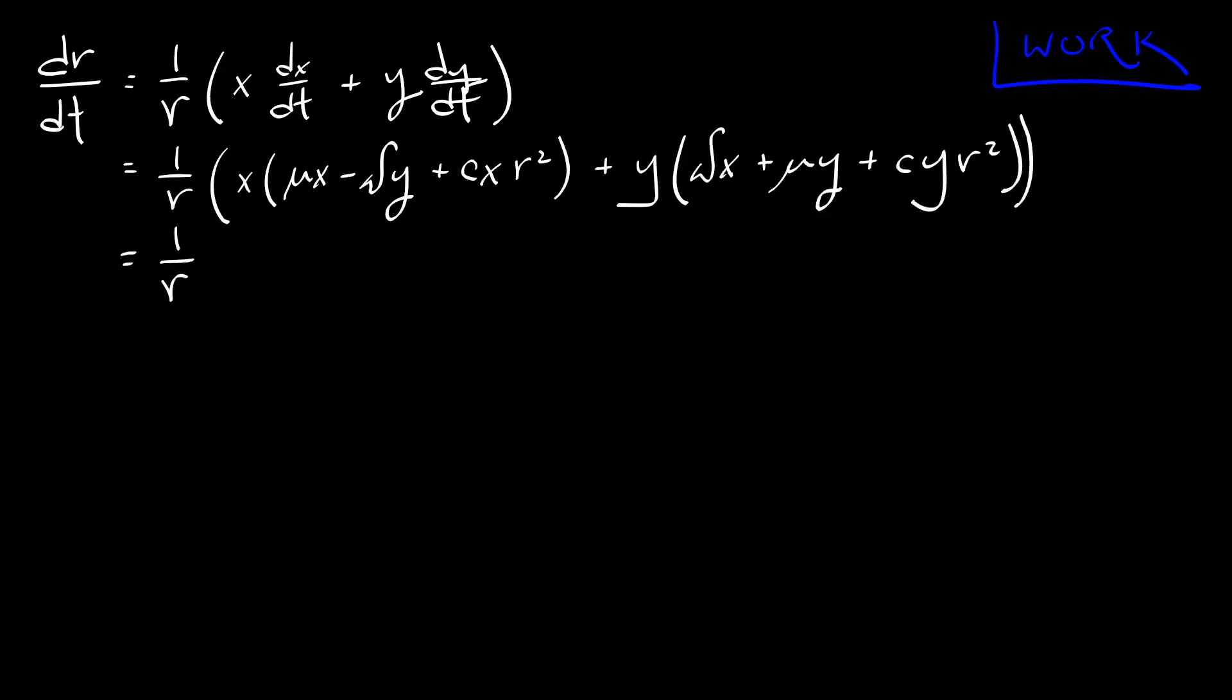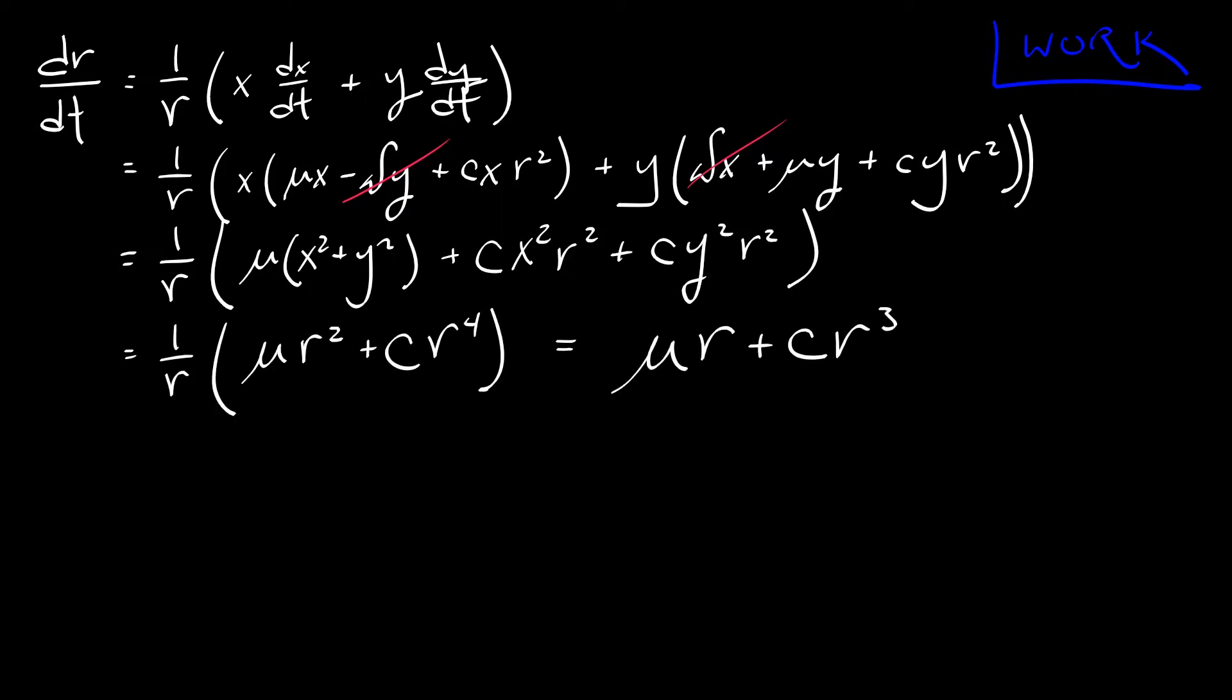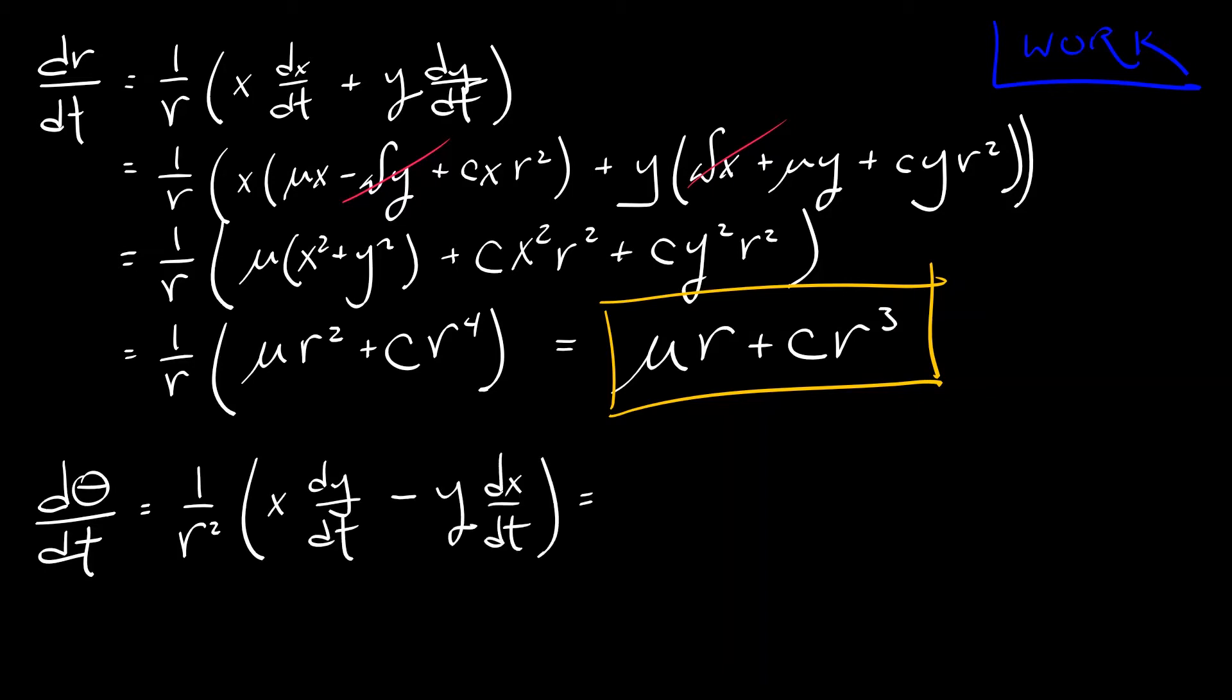So to get started, if we take dr dt, we write out the expression for that in terms of r, x, y, dx dt, dy dt. If we substitute in for dx dt and dy dt, the terms from the normal form, we have to do a little bit of algebraic simplification. But in the end, we get something so nice. It turns out that dr dt equals mu times r plus c times r cubed. Doing the exact same thing on the angular coordinate on d theta dt gives us that d theta dt equals omega, that constant.